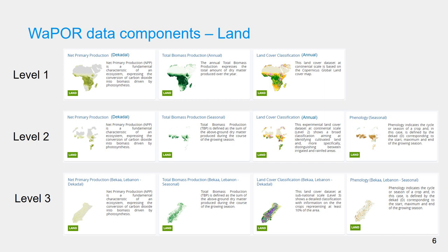The land data components include net primary production, total biomass production, land cover classification, and phenology. Decadal net primary production is available at all three levels. Total biomass production is available annually at level 1 and seasonally at level 2 and 3. Similarly, phenology is available seasonally at level 2 and 3. Land cover classification is available annually at level 1 and 2.